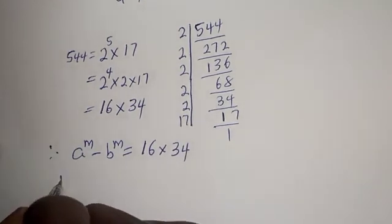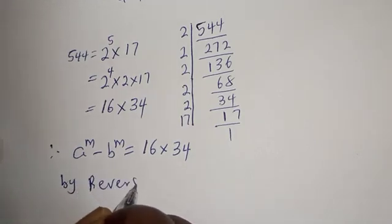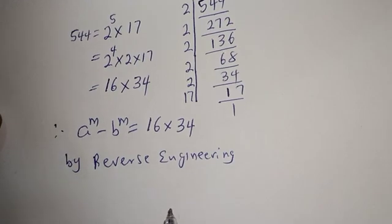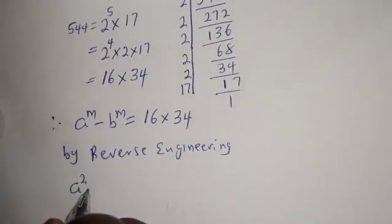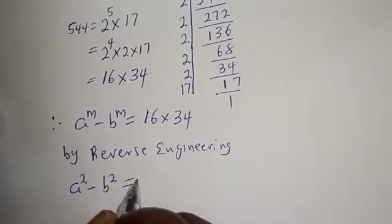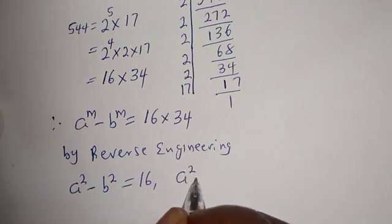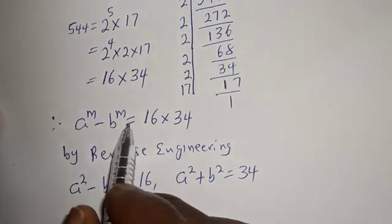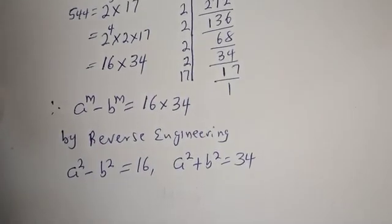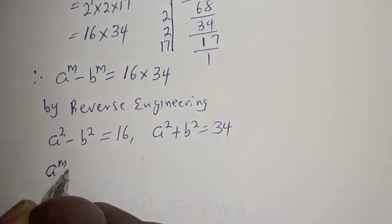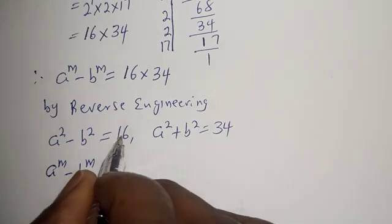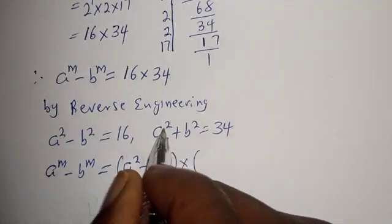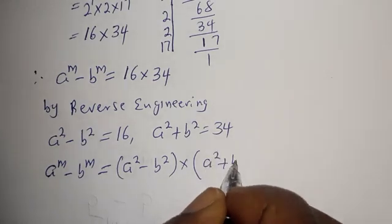Now by reverse engineering method, we have a squared minus b squared equal to 16 and a squared plus b squared equal to 34. And we have a raised to power m minus b raised to power m equal to 16 multiplied by 34. Let's substitute: a raised to power m minus b raised to power m equals (a squared minus b squared) multiplied by (a squared plus b squared).